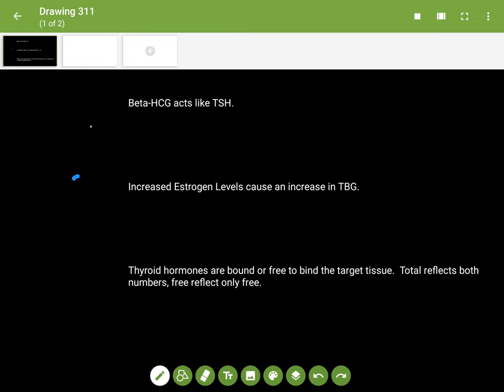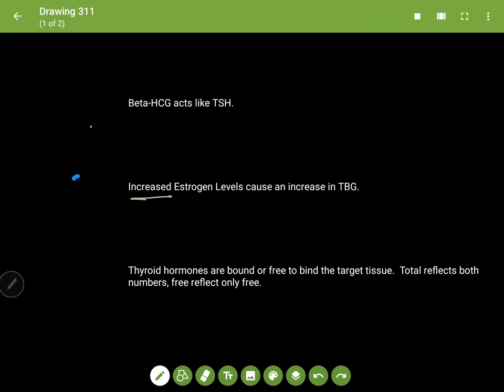One is beta-HCG, which obviously is not present in the non-pregnant state. And we have estrogen, which is present in the non-pregnant state but is increased in pregnancy.